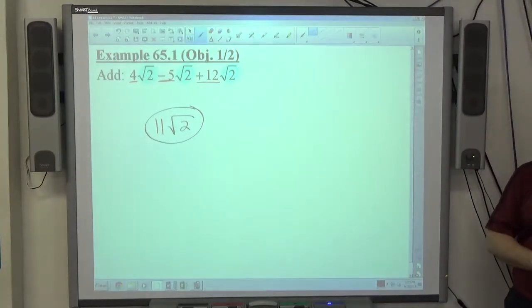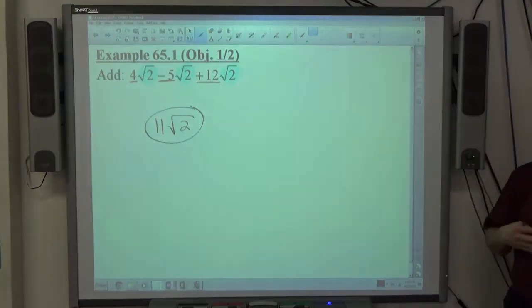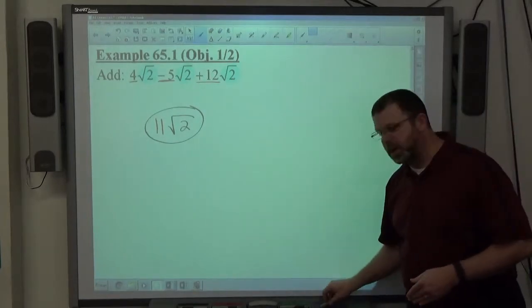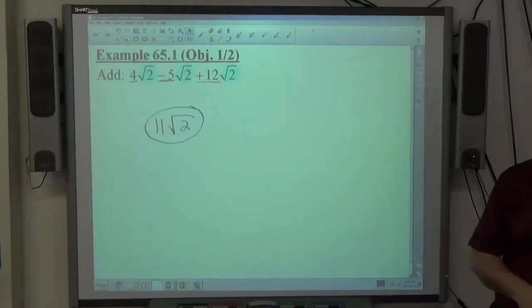So again, addition and subtraction of radicals requires that the radicals be the same. And then you simply add and subtract the numbers in front and stick in the same square root that made them the same on the answer.